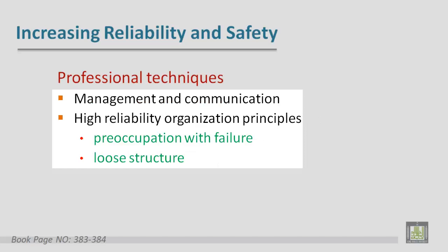Management experts use the term High Reliability Organization, or HRO, for an organization — either business or government — that operates in difficult environments, often with complex technology, where failures can have extreme consequences. For example, air traffic control and nuclear power plants. Preoccupation with failure means always assuming something unexpected can go wrong — not just planning, designing, and programming for all problems the team can foresee, but always being aware that they might miss something, and being alert to cues that might indicate an error, including fully analyzing near failures.